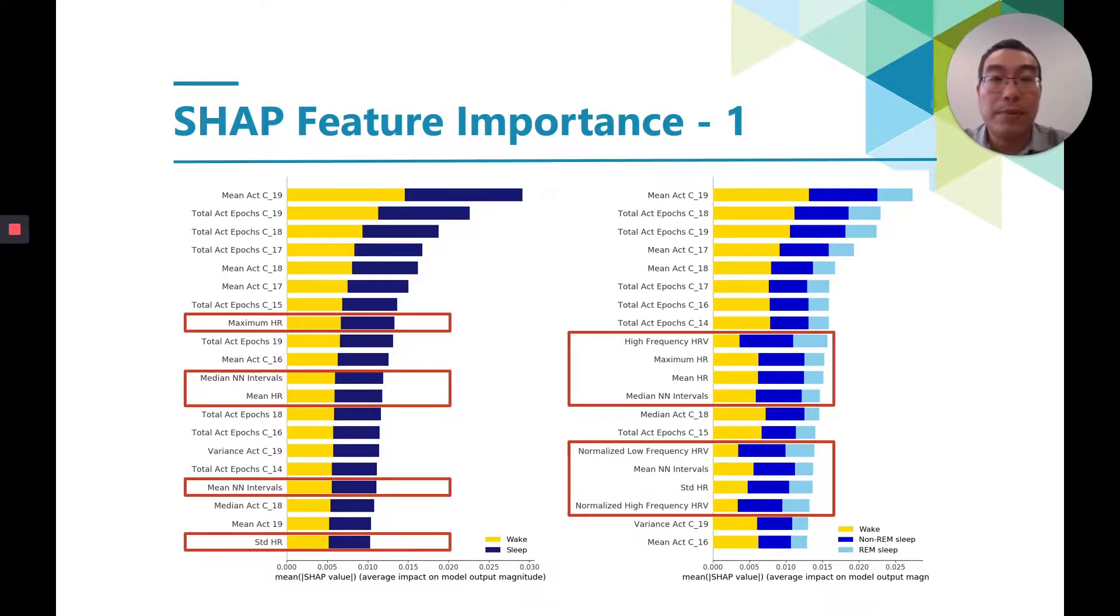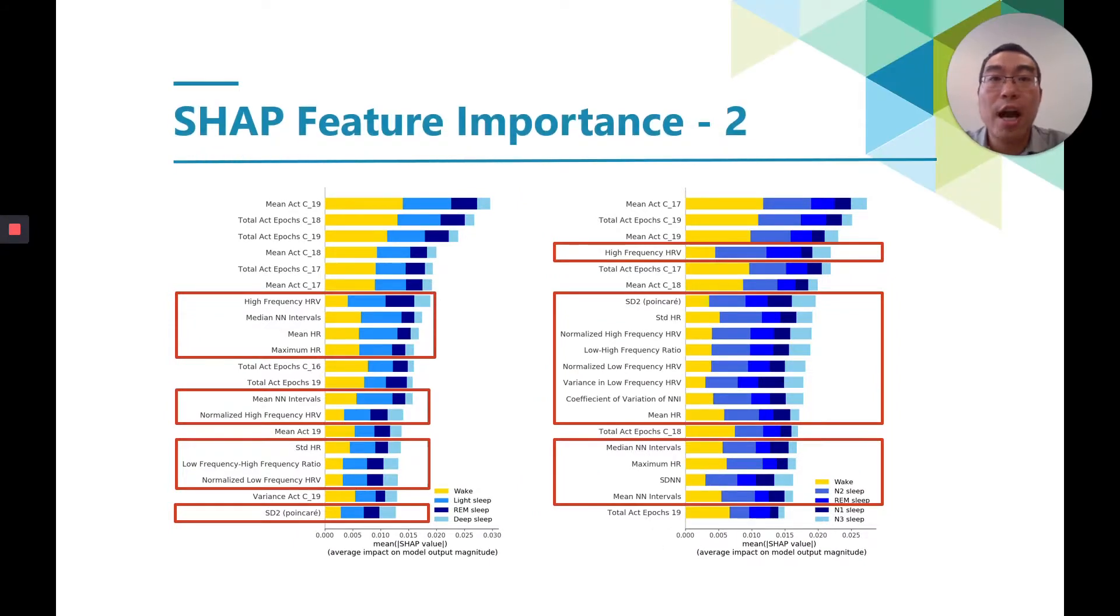Moreover, we also proposed to use the SHAP method on random forest to gain better understanding of how features contribute to classification of a particular sleep stage. As you could see from the slides, as we increased the granularity of the sleep stages, the HRV features become more and more important.